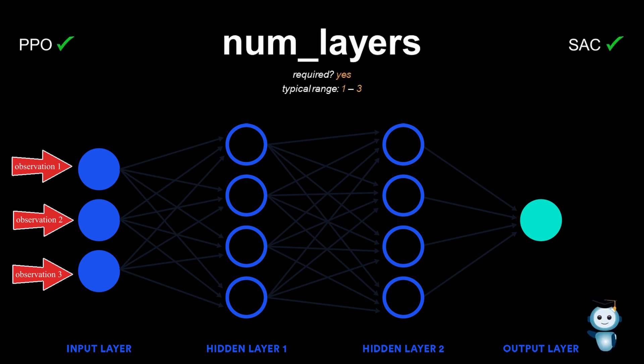With the numLayers parameter, we can define how many hidden layers the neural network has. The more complex the problem, the more layers are usually needed to mathematically represent the complex patterns that occur, especially when using a continuous action space.